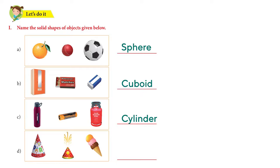Now the last one — we have a birthday hat, a firecracker, and an ice cream cone. So that's why we call it an ice cream cone, because it's in the shape of a cone. There are more activities given in the book. You can go ahead and colour — if you see a sphere, colour that; if it is a cube, figure out which one looks like a cube and colour them.